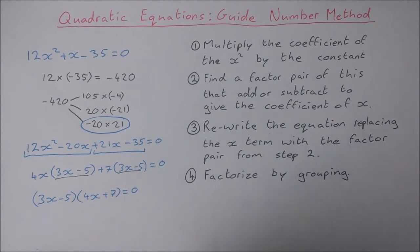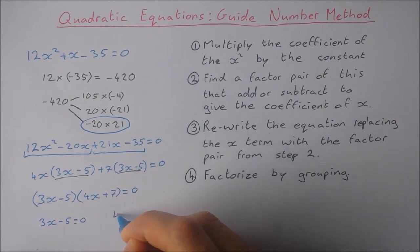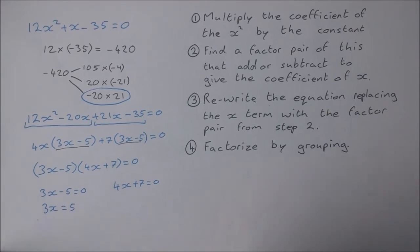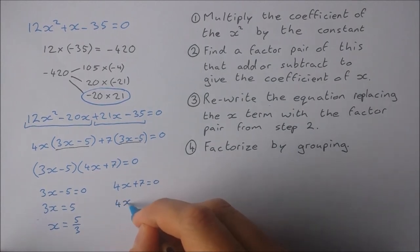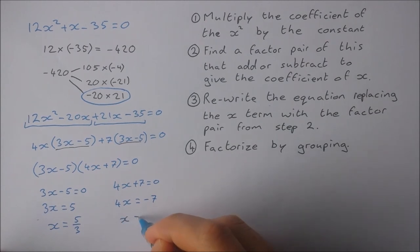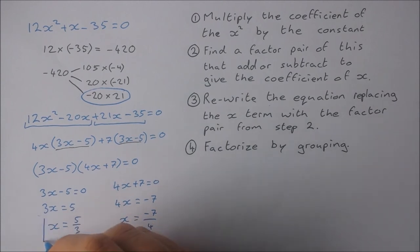Now it's just a matter of solving for x, so I let each factor equal to 0: 3x - 5 equals 0 and 4x + 7 equals 0. Over here I have 3x equals 5, so therefore x is equal to 5/3. Over here 4x equals -7, so therefore x is equal to -7/4. And these are my two solutions for the equation.